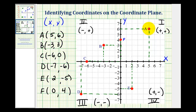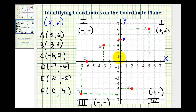Point A is in quadrant one, point B is in quadrant two, point D is in quadrant three, and point E is in quadrant four. Notice that point C and F lie on the axes and they are not considered to be in a quadrant. Point C lies on the x-axis and point F lies on the y-axis. I hope you found this helpful.